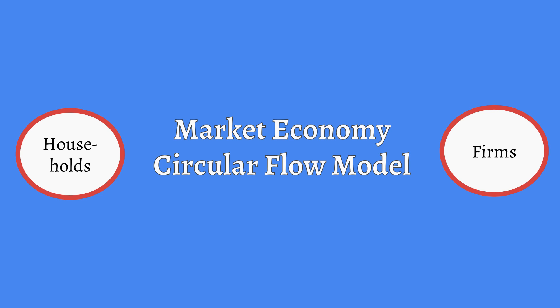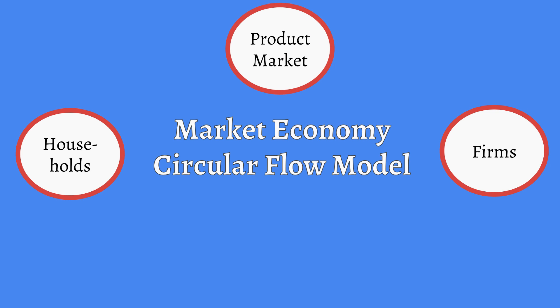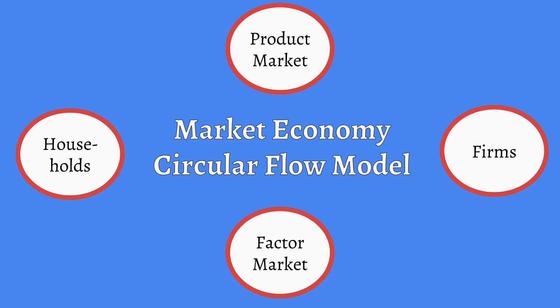The next stop between firms and households is called the product market. In the product market, like any market, you have a buyer and seller coming together. So the things that are produced at the firm are sold here in the product market to the households. Finally, you have the factor market. The factor market is still where things are bought and sold, only the things being bought and sold this time are not products, but the factors of production — think land, capital, and of course, labor.